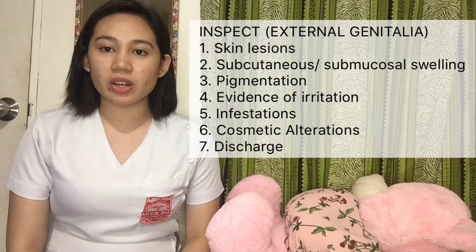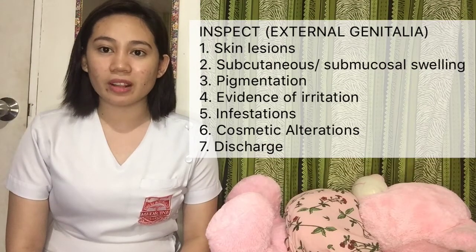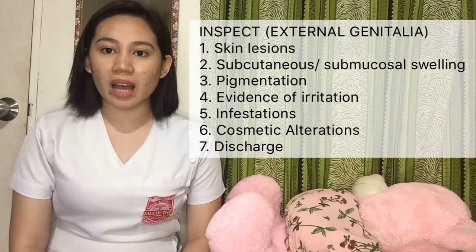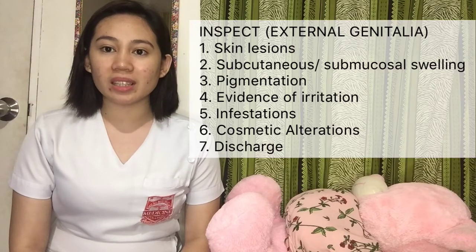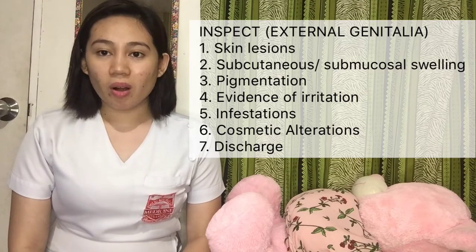Fourth is evidence of irritation — any excoriation or ulceration? Fifth is infestations — any presence of lice? Next is cosmetic alteration — any tattoo, piercing, hair removal, or genital mutilation? And last, check for any presence of discharge; assess the odor, color, quantity, and consistency. For example, if our patient is on her third trimester, we can see swelling in the vulva because the baby is dropping lower in the pelvis, and the vulva is darker because of hormonal changes.